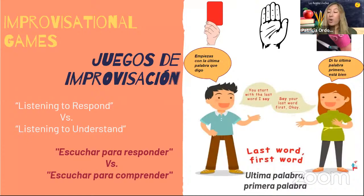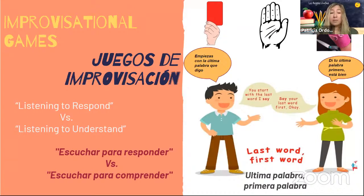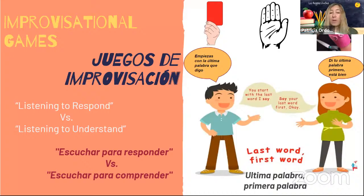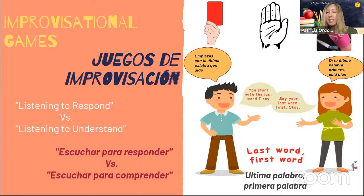Here's one example of an improvisational game called Last Word, First Word. In this game, the challenge is to listen to a person's entire sentence before responding. You can use a visual like a card, your hand, or a puppet to support students' listening skills. When you say the last word in the sentence, raise that visual to kinesthetically recall the last word so the child is ready to use it as the first word in their sentence. This will lower anxiety and make the activity most enjoyable. To demonstrate, I'm going to invite my colleague Diane, along with her finger puppet Miss Piggy, to join me.